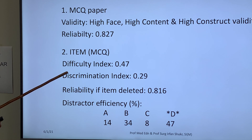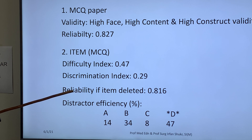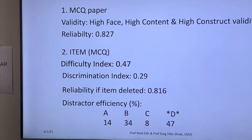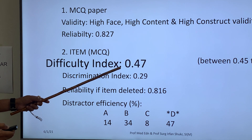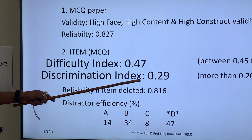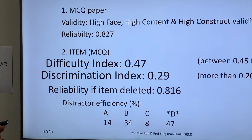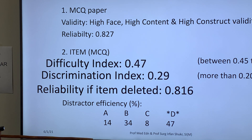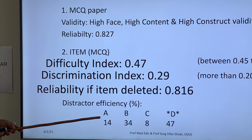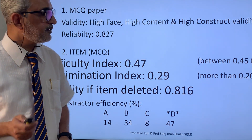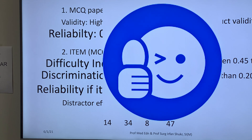In item analysis for this question: difficulty index is 0.47, discrimination index is 0.29, reliability if item deleted is 0.816, and 47% of students chose option B as correct. The difficulty index of 0.47 is within the ideal range of 0.45 to 0.75 — acceptable. Discrimination index of 0.29 is more than 0.20 — acceptable. Reliability if item deleted of 0.816 is less than the overall reliability of 0.827 — acceptable. No distractor was chosen by 5% or fewer students. Therefore the consensus is: it is a good MCQ.